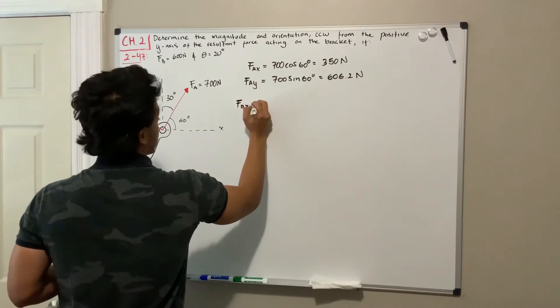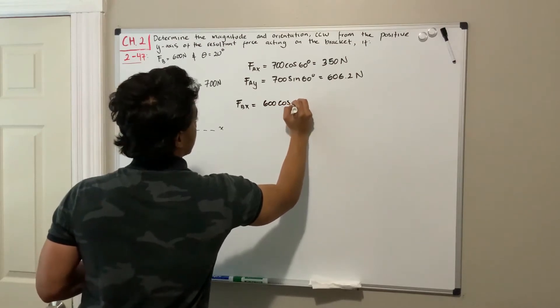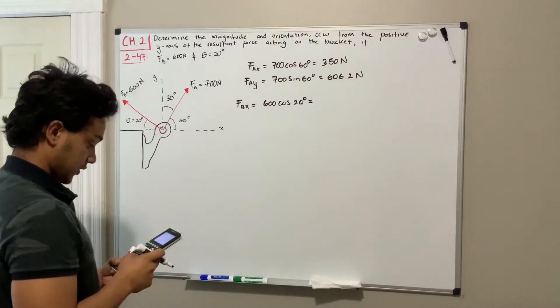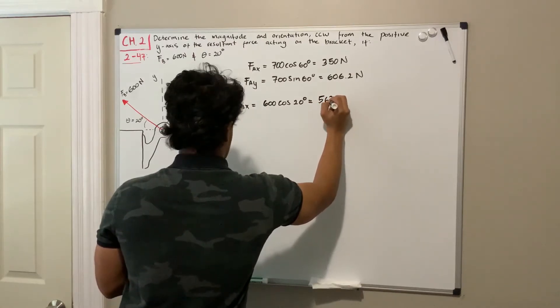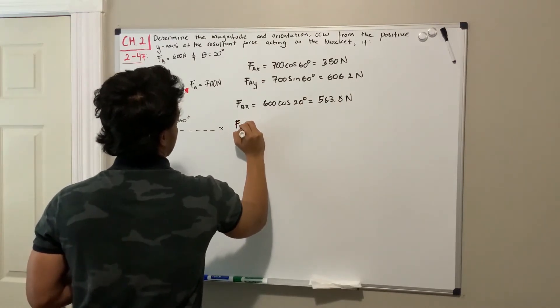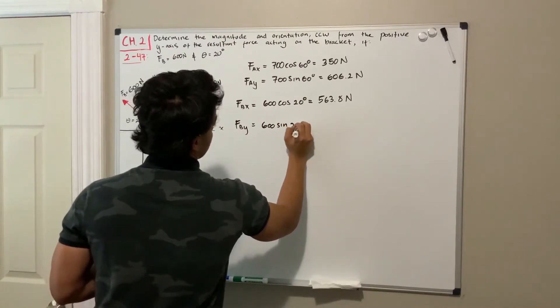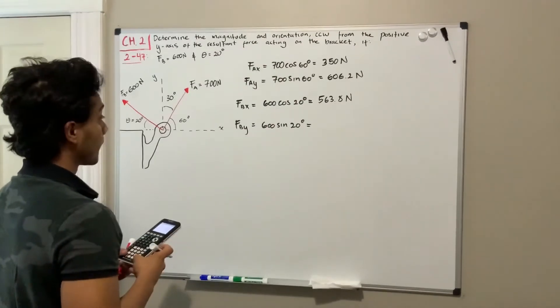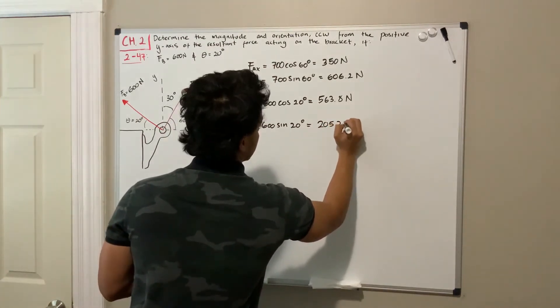Okay, now we can do F_b. So if we do F_b in the x-direction, we're going to do 600 newtons multiplied by the cosine of 20 degrees. F_b in the y-direction is going to be 600 multiplied by the sine of 20 degrees, which is going to be equal to 600 sine of 20, that's equal to 205.2 newtons.